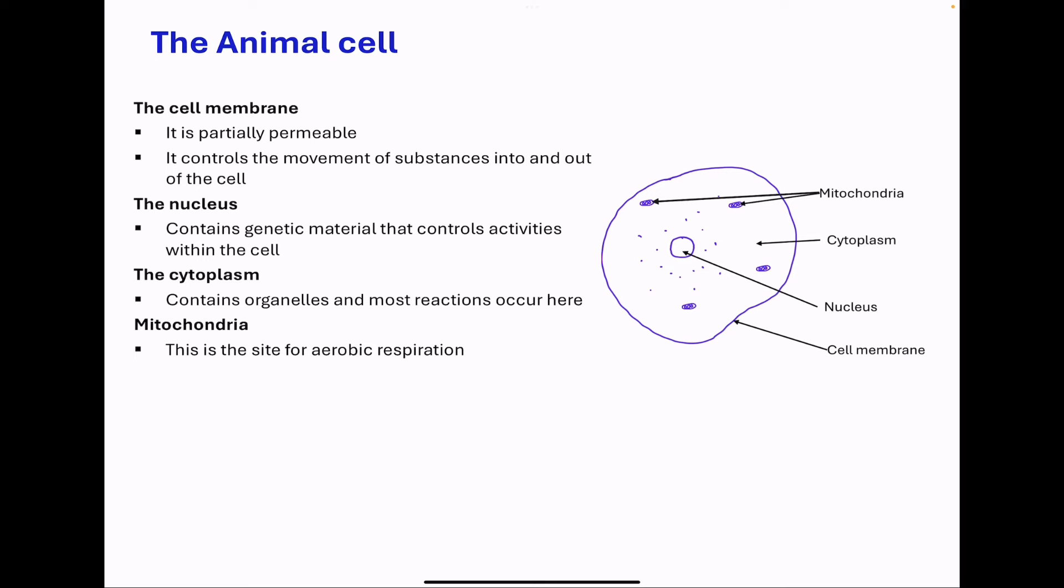So beginning with the animal cell, like the example I drew here, the animal cell has a cell membrane. This is the cell surface membrane, and it's partially permeable. The purpose is to control the movement of substances into and out of the cell.